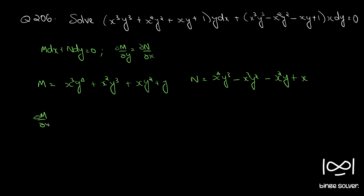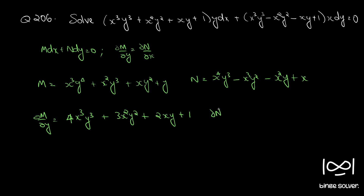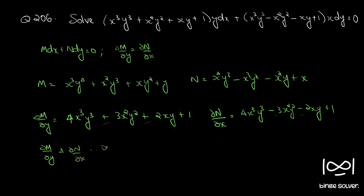Now ∂M/∂y is 4x³y³ + 3x²y² + 2xy + 1, and ∂N/∂x is 4x³y³ minus 3x²y² minus 2xy + 1. Comparing, you can see these two have plus signs while these two have minus signs, so ∂M/∂y is not equal to ∂N/∂x. Therefore the differential equation is not exact.